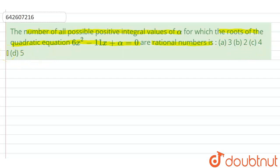So let's start with the question. The solution: basically 6x square minus 11x plus alpha equals 0 is the quadratic equation given. Now for this equation to have rational roots, the discriminant, that is b square minus 4ac, should be a perfect square.